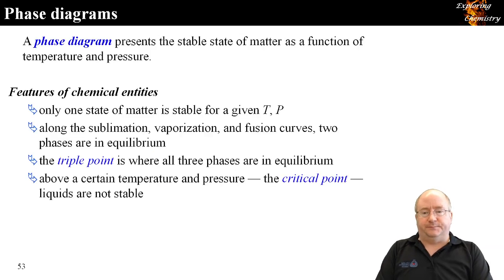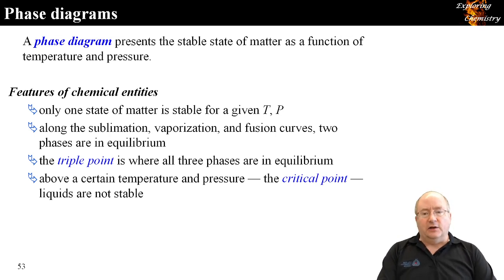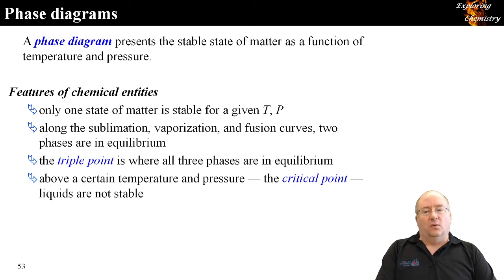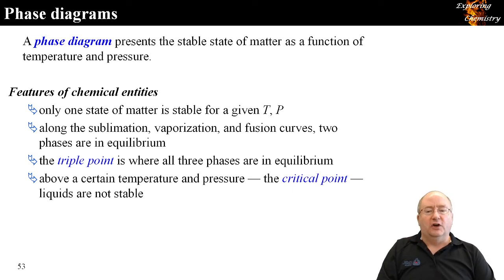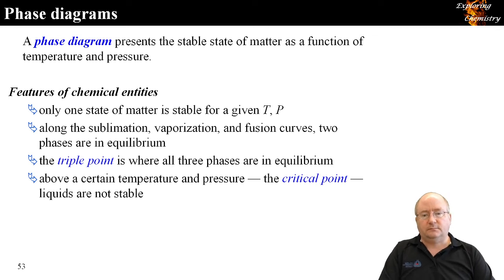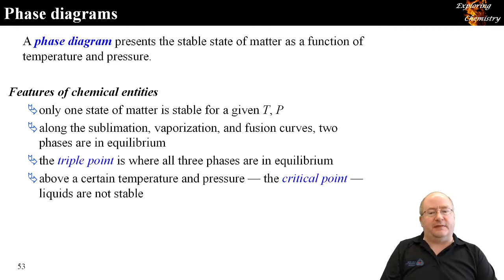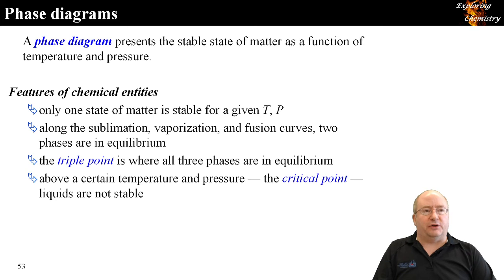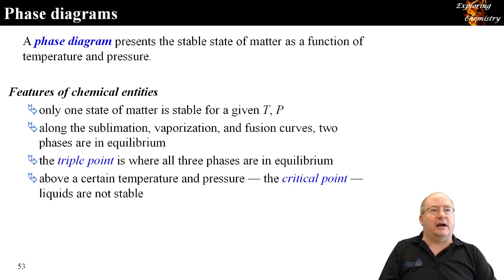One feature of phase diagrams is that there is only one stable state of matter for a given temperature and pressure. Along the sublimation, vaporization, or fusion curves, two phases are in equilibrium — for example, along the sublimation curve it is solid and gas that are in equilibrium. There is one point where three phases are simultaneously in equilibrium — the triple point. And above a certain temperature and pressure called the critical point, liquids are no longer stable, giving rise to supercritical fluids.